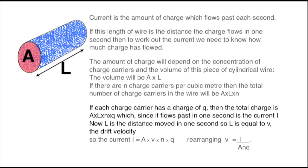If the value of each charge carrier is Q, the total charge will then be ALNQ. This charge flows past in one second and therefore must be the current I.